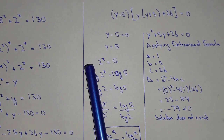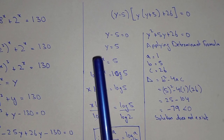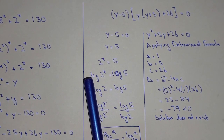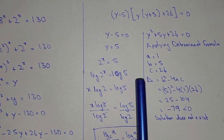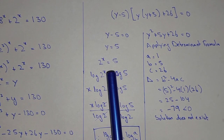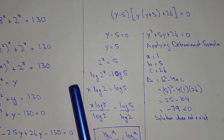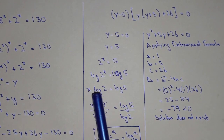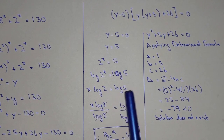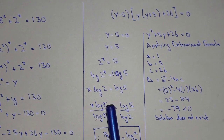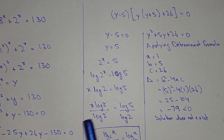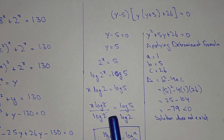Now, since y equals 5 and we know y equals 2 power x, we have 2 power x equal to 5. Taking log on both sides: log of 2 power x equals log 5. The power x comes down on the left-hand side, giving x times log 2 equals log 5. Dividing both sides by log 2, log 2 cancels, and we get x equals log 5 divided by log 2.